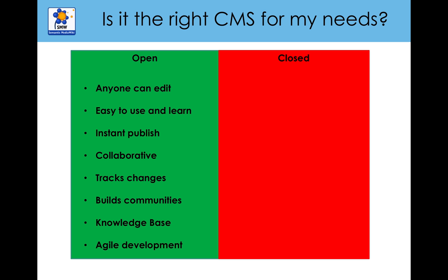It allows people to collaborate even if they're geographically separated. It allows you to track changes, which I'll demonstrate in a bit. It also has other benefits: it allows communities to be built as people realize they have a common interest, knowledge bases start to form as people collect their information — which is vitally important for organizations — and it supports agile development, throwing things out there, seeing how they're reviewed, and then changing them accordingly. It's a constantly evolutionary process.